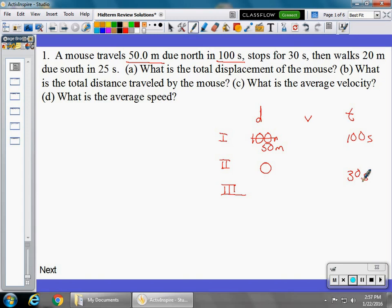And finally, the third leg of the trip, it's 20 meters due south. South for our displacement. Again, negative displacement for south, because displacement is a vector quantity. So we're going to say that is negative 20 meters, and the time is going to be 25 seconds.